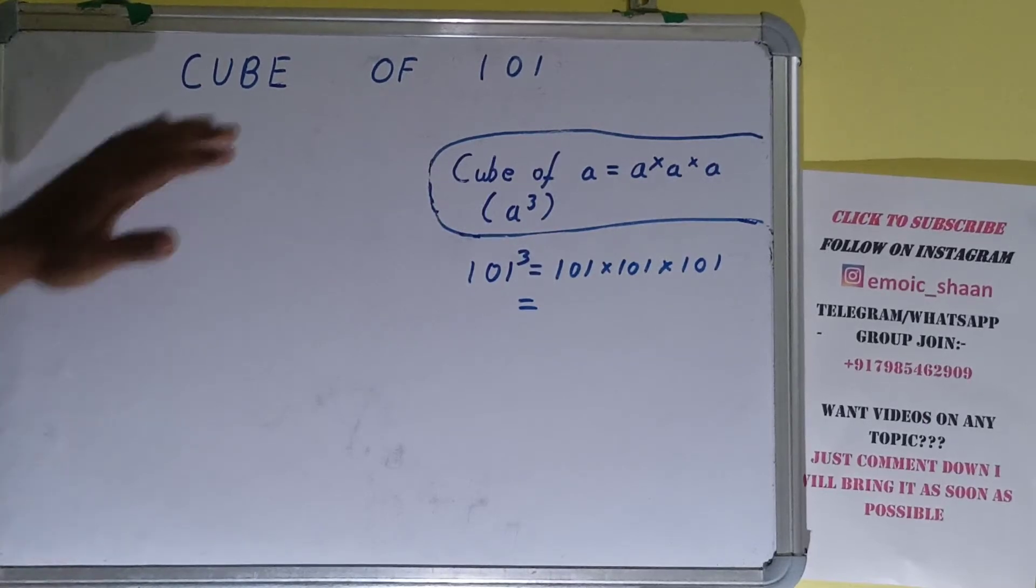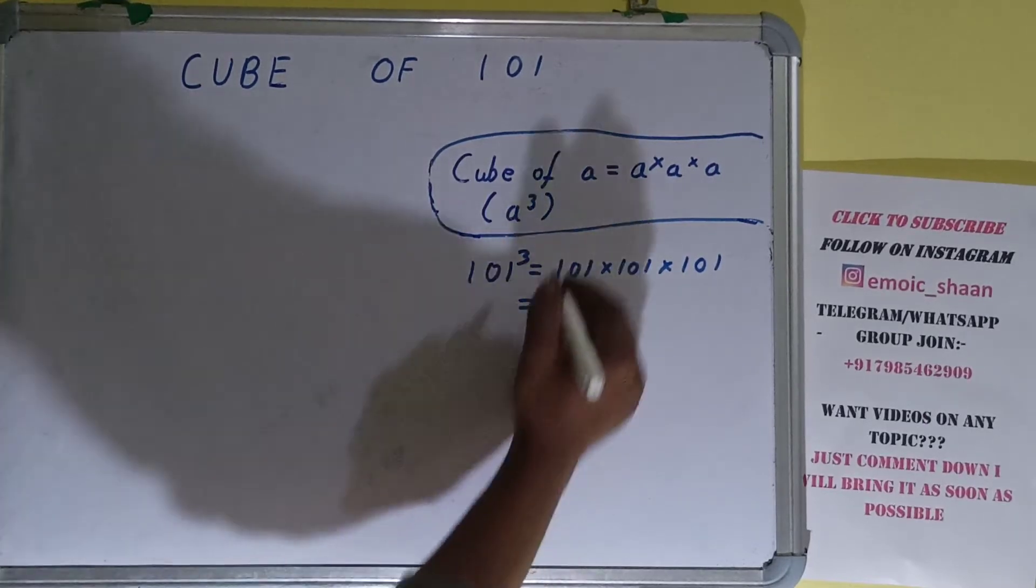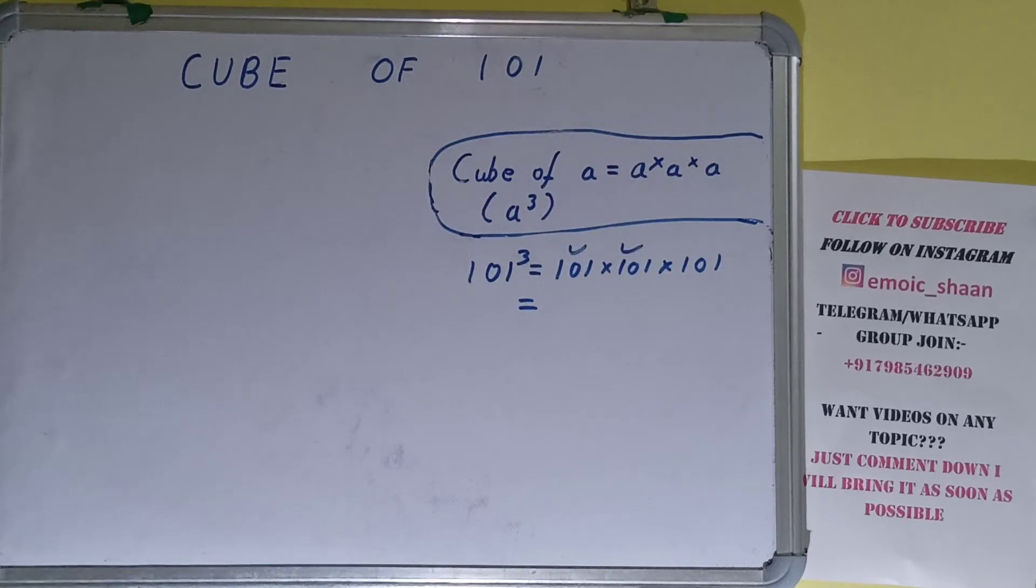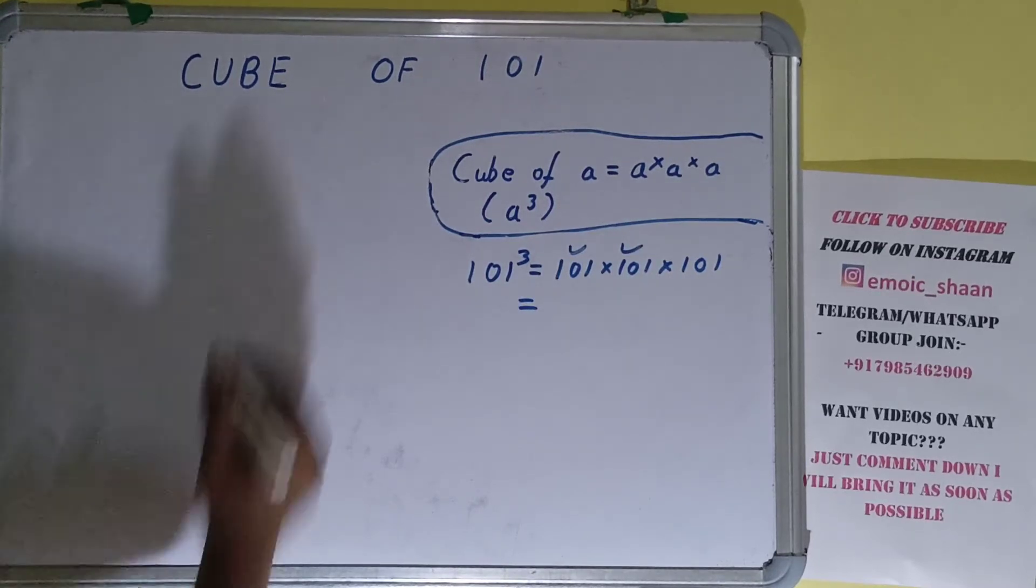And to find out the answer we'll do the normal multiplication. We'll first multiply the first two terms and whatever answer we'll be getting we'll multiply with the third term. So let's begin.